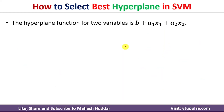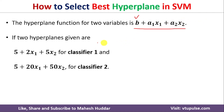Let us say that we have been given a two-variable hyperplane. The hyperplane equation looks something like this: b plus a1x1 plus a2x2. If we have three variables, we will get one more term — a3x3 — and similarly a4x4 and so on. Here b is the intercept, a1 is the coefficient of x1, and a2 is the coefficient of x2. Now let us say that we have been given two hyperplanes: the first hyperplane is 5 + 2x1 + 5x2, and the second hyperplane is 5 + 20x1 + 50x2. The question is: between these two hyperplanes, which one is the best hyperplane?